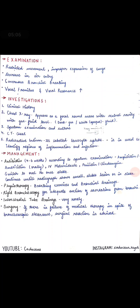We check at the intercostal spaces and scapular border to assess vocal fremitus by feeling vibrations. For vocal resonance, we use a stethoscope to auscultate and listen to the vibration sounds. In a lung abscess case, these sounds are heard more strongly. This concludes the examination.